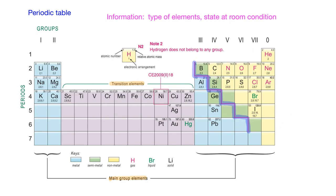We can also identify the state at room condition for different elements by looking at the color of the symbol. For metals, most symbols are black in color, meaning solid state — so most metals are solid at room condition. There is one green symbol, which is mercury — mercury is in liquid state at room condition. Gas state mainly appears in the non-metal part; the red symbols indicate gas state, such as oxygen and chlorine.